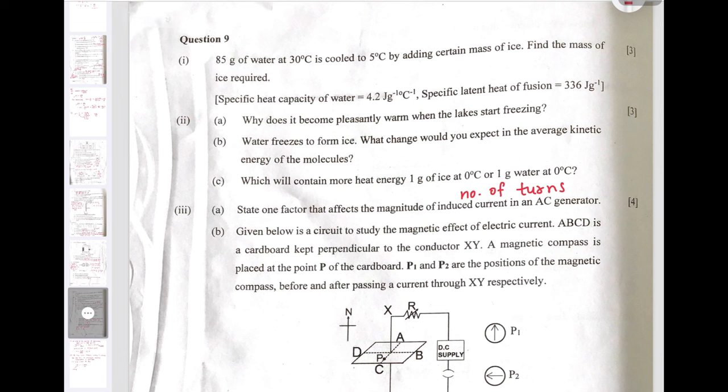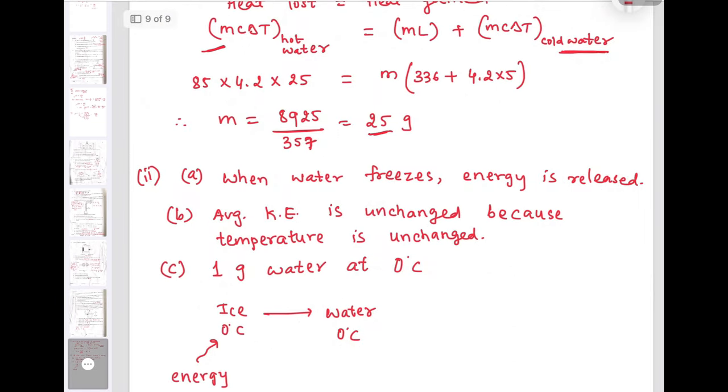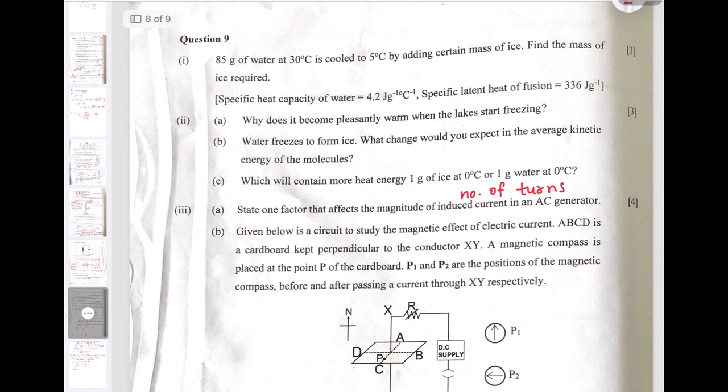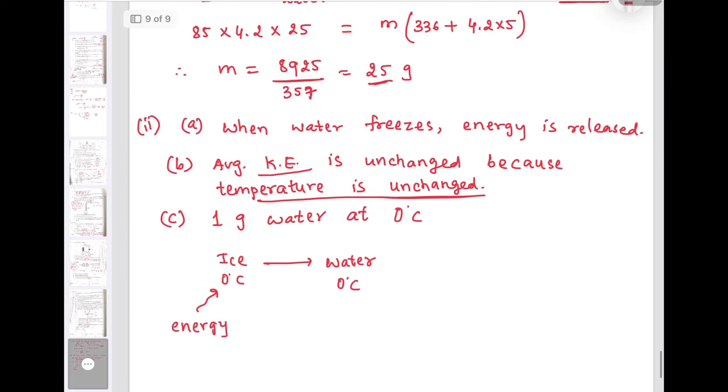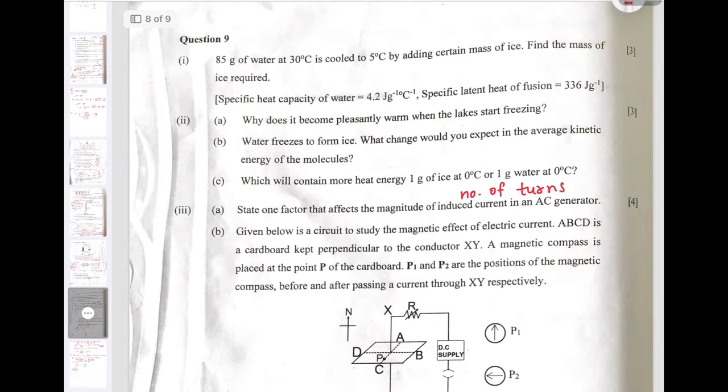Next question: Water freezes to form ice. What change would you expect in the average kinetic energy? There is no change in the kinetic energy, because the temperature does not change when the state changes. Which will contain more heat energy: 1 gram of ice at 0 degree Celsius or 1 gram water at 0 degree Celsius? The answer is 1 gram water at 0 degree Celsius, because ice at 0 degree Celsius first will absorb certain amount of energy and then that ice converts into water at 0 degree Celsius. Naturally water at 0 degree Celsius contains more energy than the same amount of ice at 0 degree Celsius.